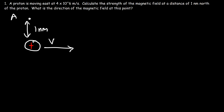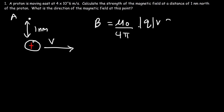The formula that you need is this equation. B, the magnetic field, is equal to the permeability of free space divided by 4 pi, times q — this is going to be the absolute value of q — times the velocity, multiplied by sine theta, divided by r squared.